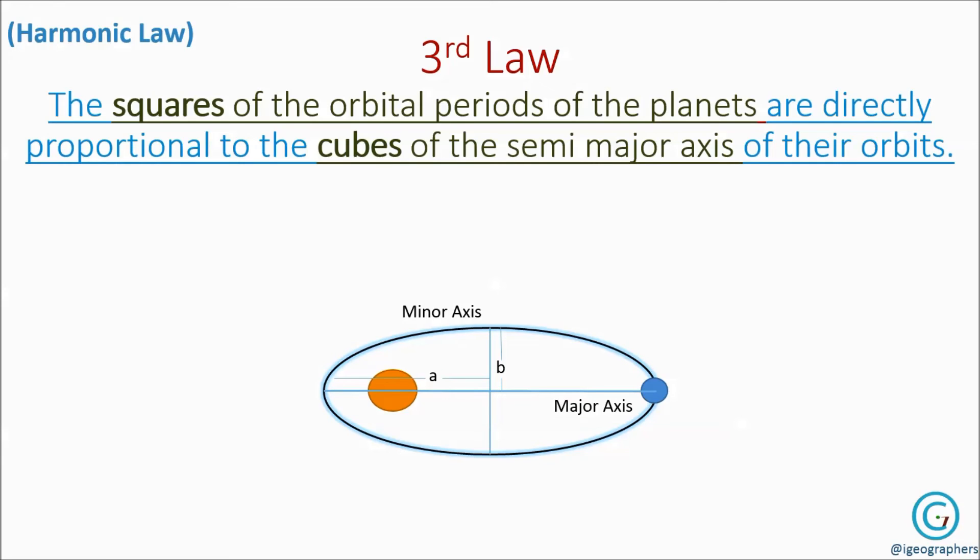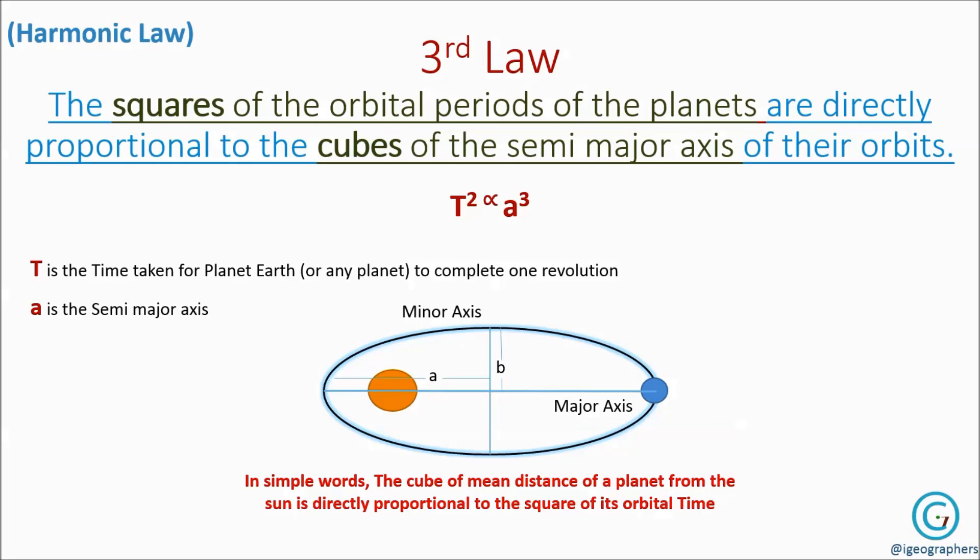Then we can easily equate the third law of planetary motion: T² is directly proportional to a³. In simple words, the cube of mean distance of a planet from the sun is directly proportional to the square of its orbital time, i.e., the time taken by Earth or any planet to complete one revolution of the sun.